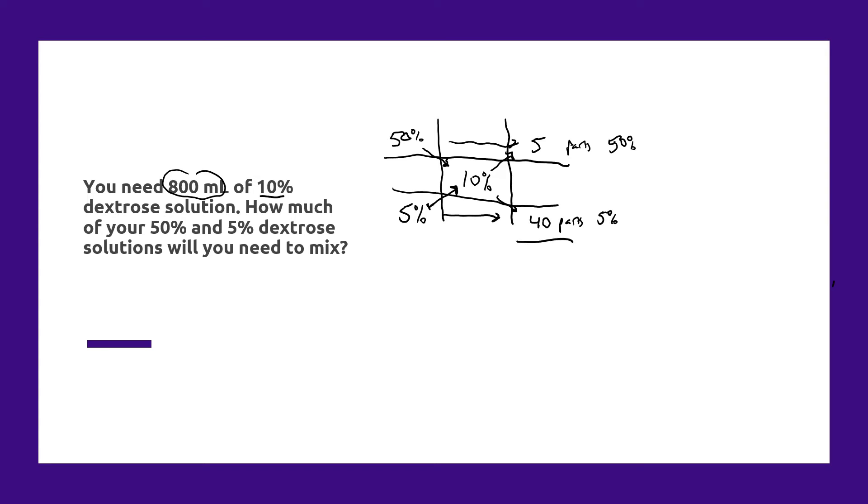So we have in this fraction a total of 45 parts. To summarize that, 5 out of those 45 parts equals 50%, and then 40 out of those 45 parts is going to be your 5% solution.